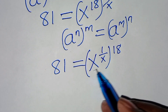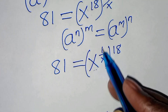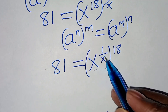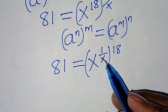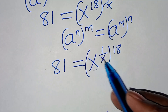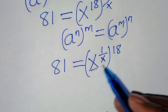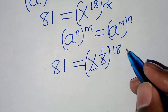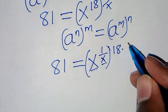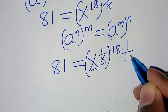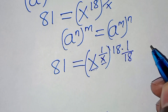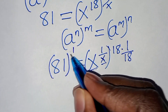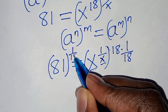We have the base x here, and also the reciprocal of the exponent, that is exponent x. It's the same here. So the next step is to eliminate this 18 by multiplying both sides by 1 over 18. Here, 1 over 18.